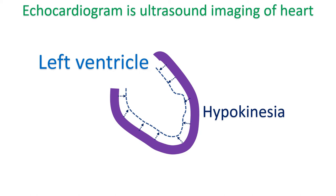Hypokinesia means decreased movement, indicating that a region of the heart muscle is not contracting well when the rest of the heart muscle is contracting well. The commonest cause of hypokinesia is a decrease in blood supply to that region due to a block in the blood vessel, known as coronary artery disease. Coronary arteries are blood vessels supplying oxygenated blood to the heart muscle.